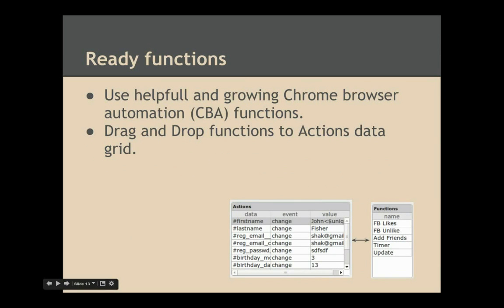Here are the ready functions. You can use helpful and growing CBA functions — just drag and drop functions to the actions data grid and CBA will call them when the workflow reaches that function. For example, fblikes likes all posts in a Facebook opened area, or you can modify it to like posts of an individual Facebook user. Similarly for unlike, and you can also use the add friend function which will click all Add Friend Facebook buttons in the opened area.